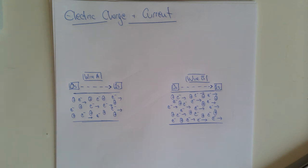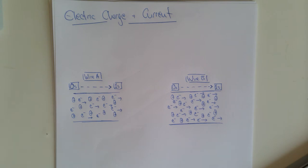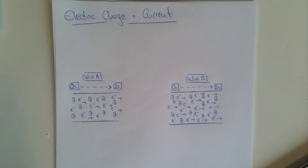Welcome to our review session on electric charge and current. In this session we're going to recall and apply the equation for electric charge, look at the theory and context behind it, and work through some examples. Thinking back to what you already know about electrical circuits — we use batteries or cells as power sources where energy is transferred from chemical storage to components like a light bulb. The pathway by which energy is transferred is the electrical current, which goes through things like copper wire.